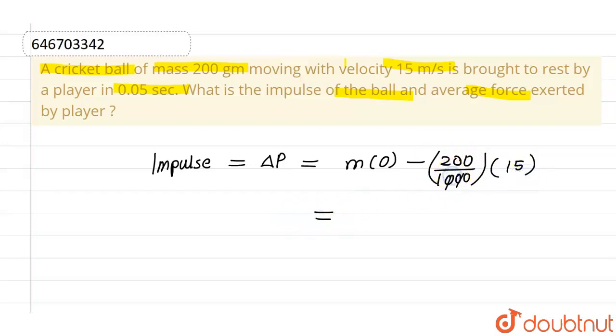This will cancel out. So what we're left with is 2 by 10, minus 2 by 10 into 15. So this is 2, this is 3, these twos will cancel out.